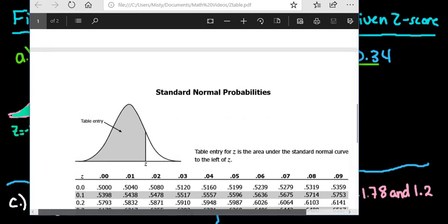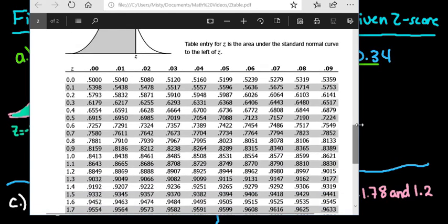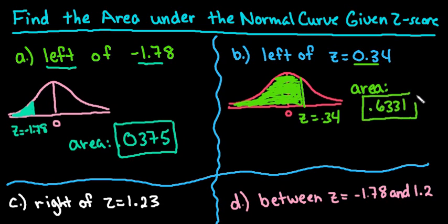So I'm going to find 0.3 in the left column and go across until I find the 4 at the top. The area is 0.6331. You can write this as a decimal or a percent — basically, 63.31% of the area is to the left of this z-score.